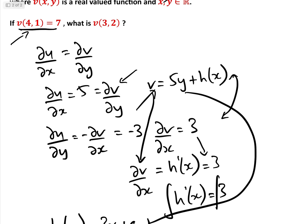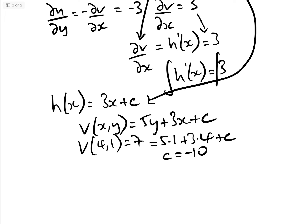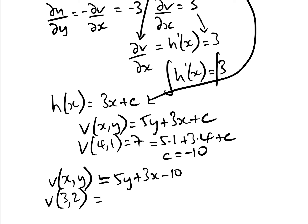We know that v(4,1) = 7, so plugging in: 7 = 5(1) + 3(4) + c = 5 + 12 + c, which gives c = -10. Therefore v(x,y) = 5y + 3x - 10. Finally, v(3,2) = 5(2) + 3(3) - 10 = 10 + 9 - 10 = 9.